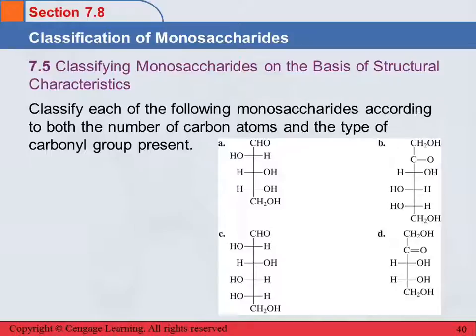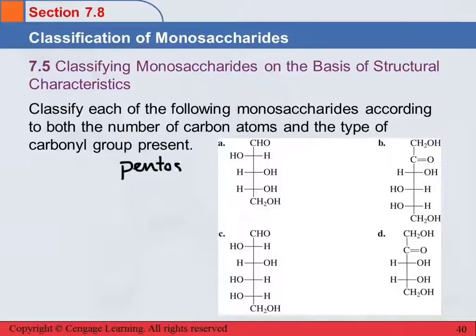Let's classify each of the following monosaccharides according to both the number of carbon atoms and the type of carbonyl group present. Saccharide A has five carbons, so that makes it a pentose. Is it an aldehyde or a ketone? It's an aldehyde — the CHO is at the end — so this is an aldose.